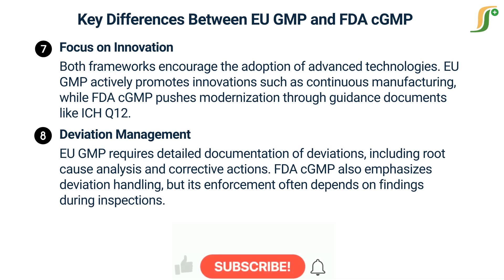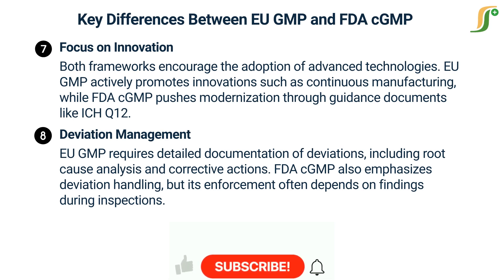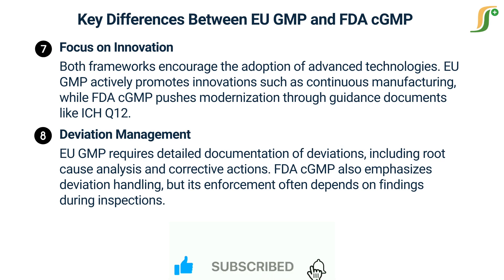On deviation management, EU GMP requires detailed documentation of deviations including root cause analysis and corrective actions. FDA CGMP also emphasizes deviation handling, but its enforcement often depends on findings during inspections.